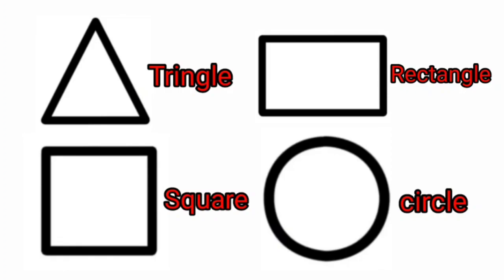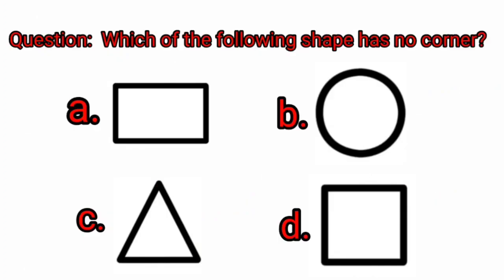Now let's solve the worksheet: which of the following shapes has no corner? A — Rectangle. Rectangle has 4 corners. B — Circle is the right answer. Circle has no corner.